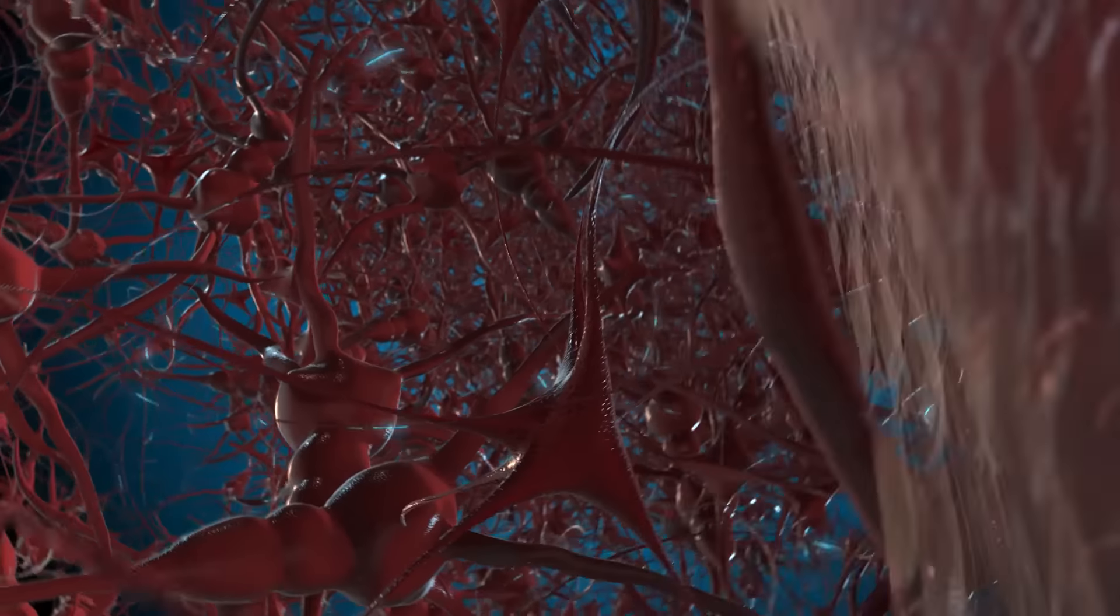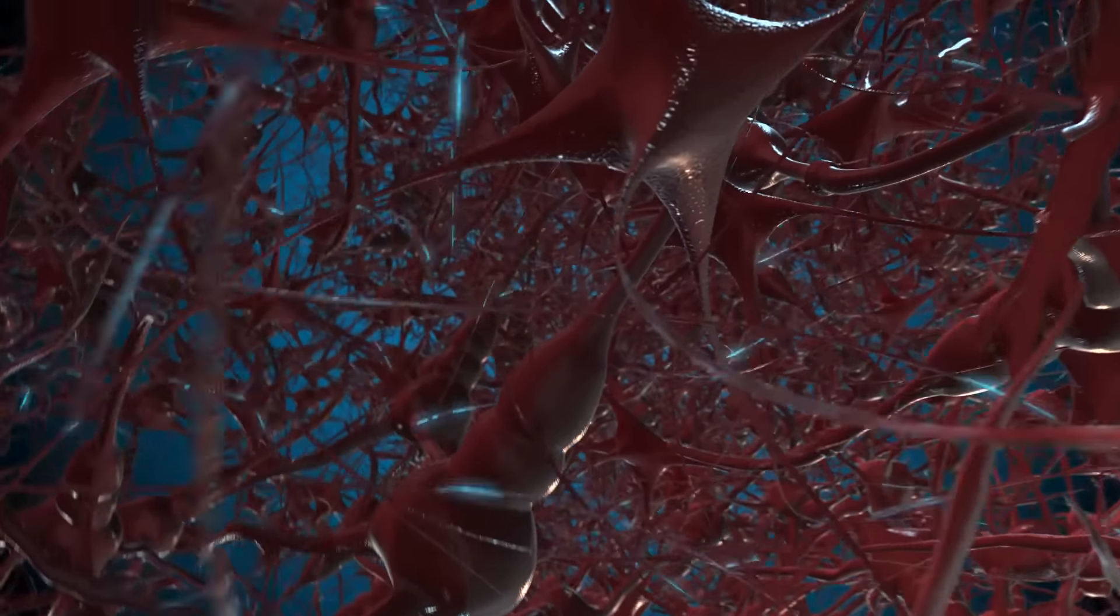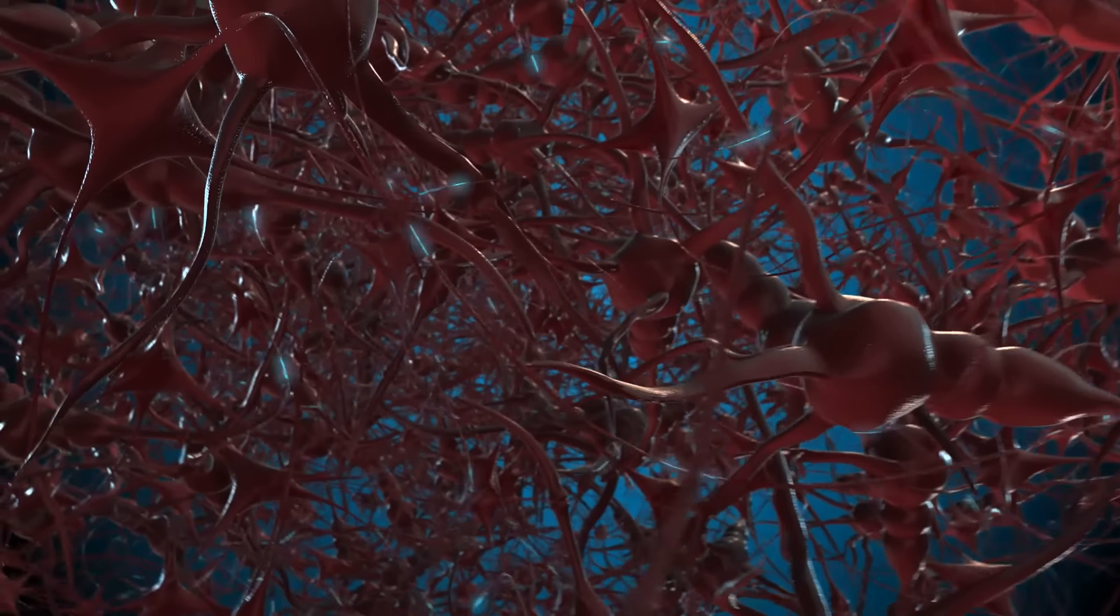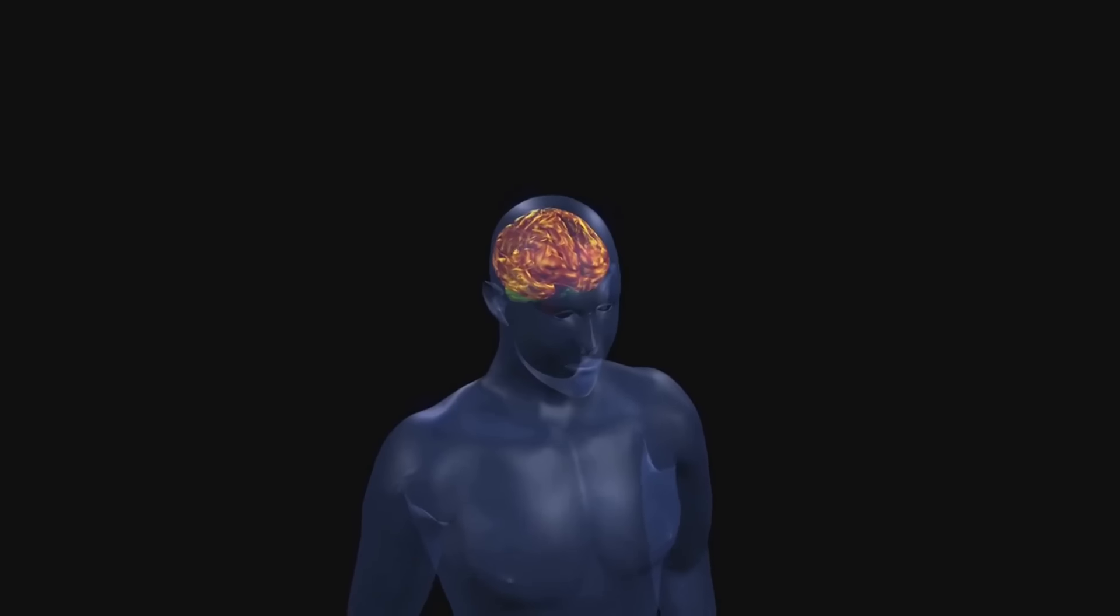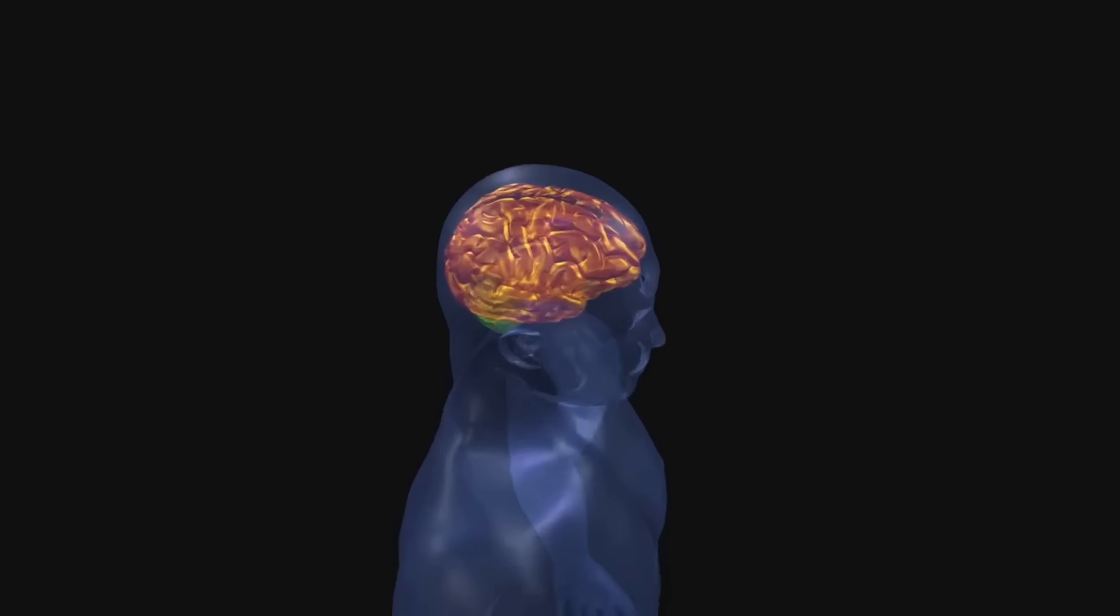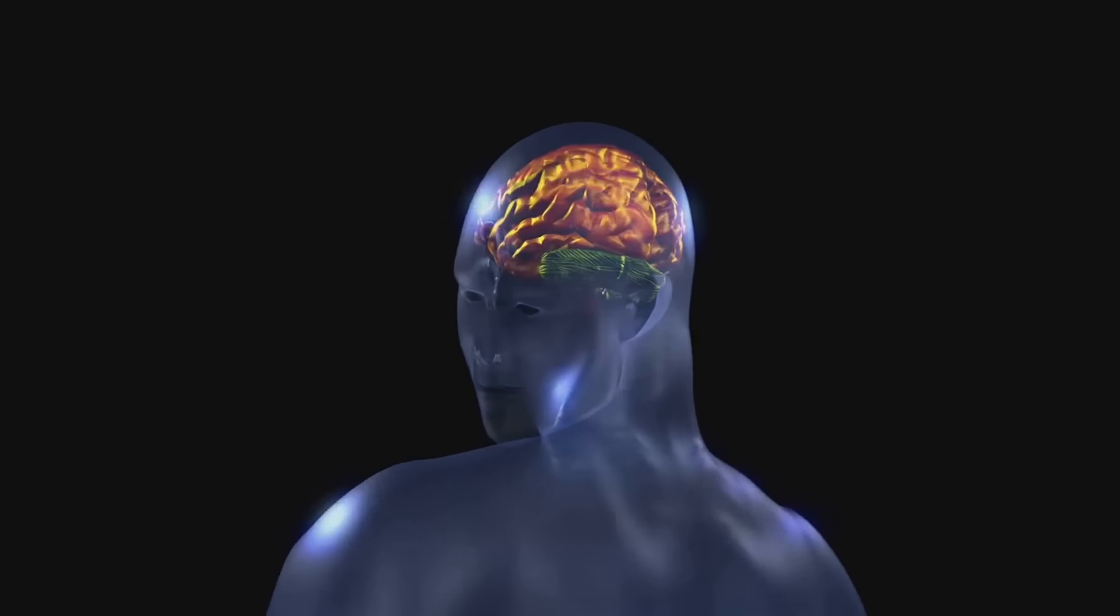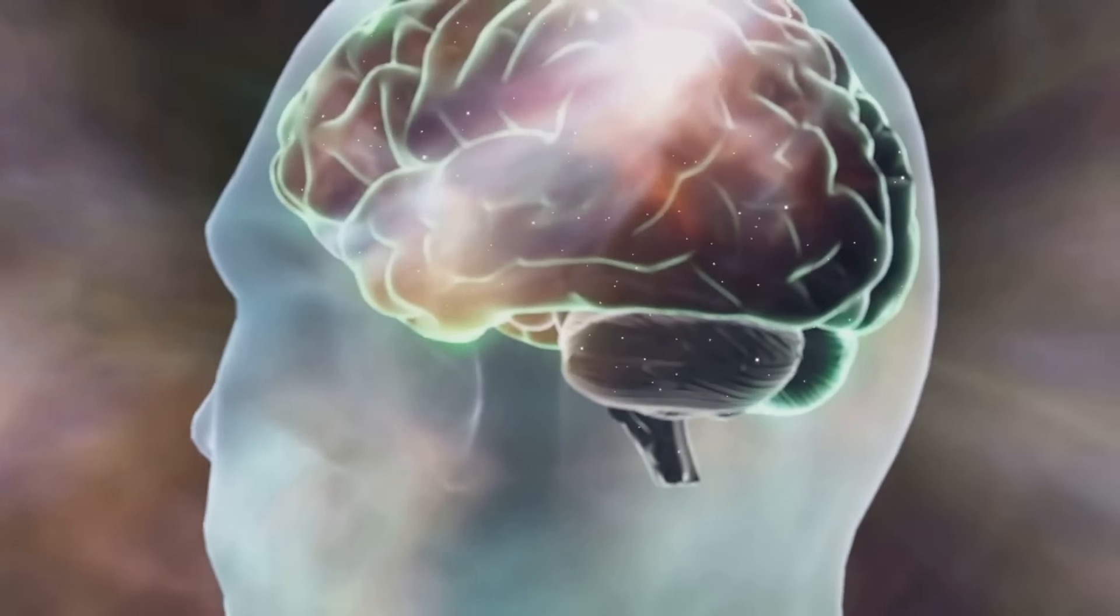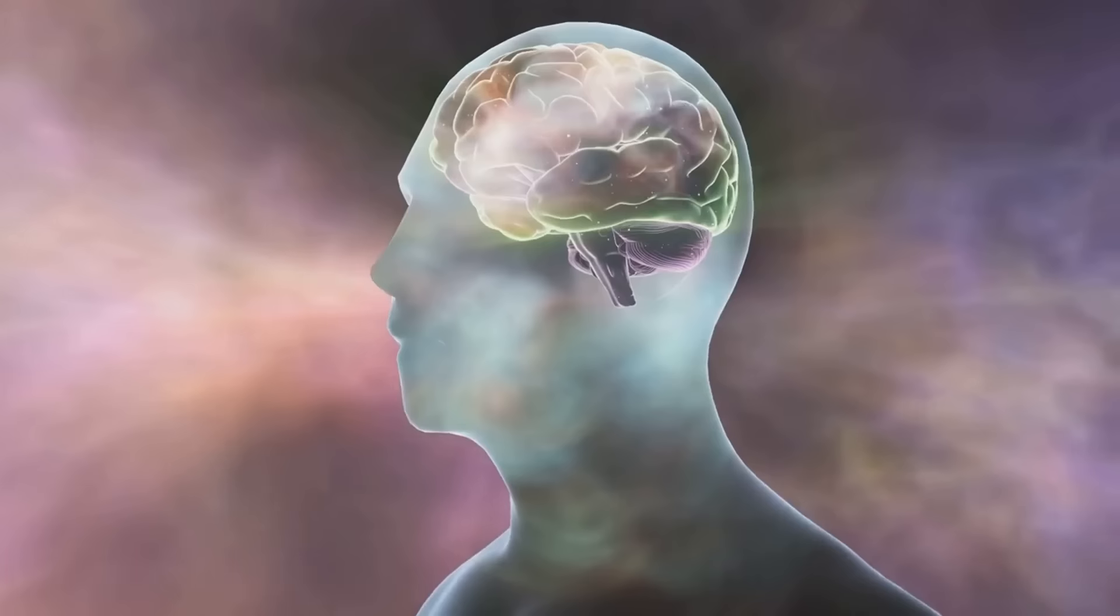As we journey through the cosmos, we begin to notice a striking resemblance between the universe and the human brain. The cosmic web, a network of galaxies interlaced with dark matter, mirrors the complex neural networks in our brains. The patterns and structures that emerge in both domains are eerily similar. This idea, the common architecture of the universe and consciousness, sets the stage for an intriguing exploration.